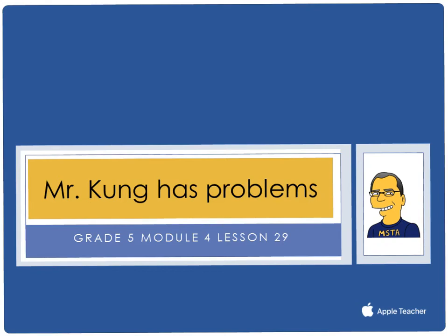Hello and welcome to another episode of Mr. Kung Has Problems. Tonight in grade 5 in module 4 we are working on lesson number 29. And that means that we are trying to connect division by a unit fraction to division by one-tenth and one-hundredth.